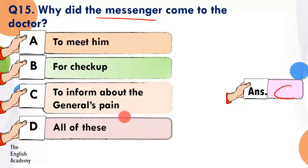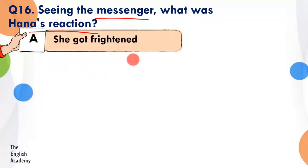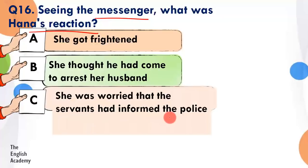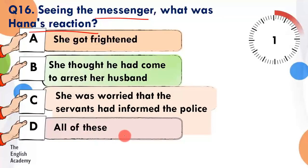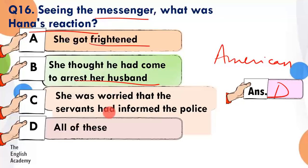Question number 16: Seeing the messenger, what was Hana's reaction? Option A: she got frightened. Option B: she thought he had come to arrest her husband. Option C: she was worried that the servants had informed the police. Option D: all of these. The answer is Option D — all of these. Hana dar gayi, use laga ki woh uske husband ko arrest karne aaya hai kyunki unhone ek American soldier ko shelter di thi, aur use laga ki shayad servants ne police ko inform kar diya.